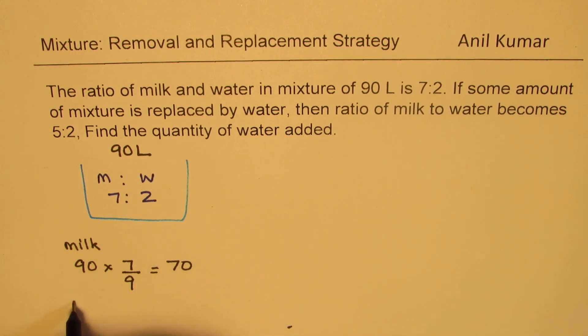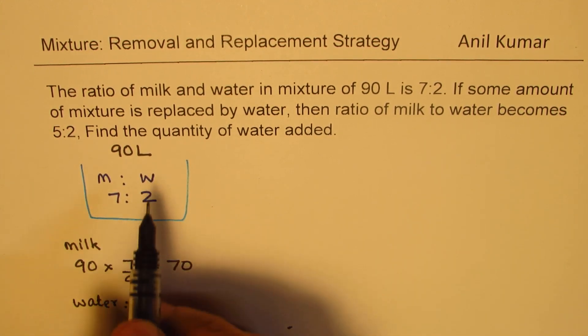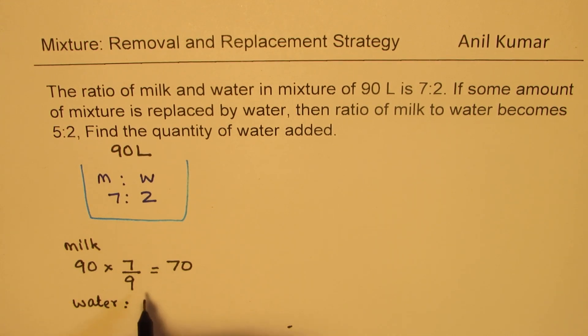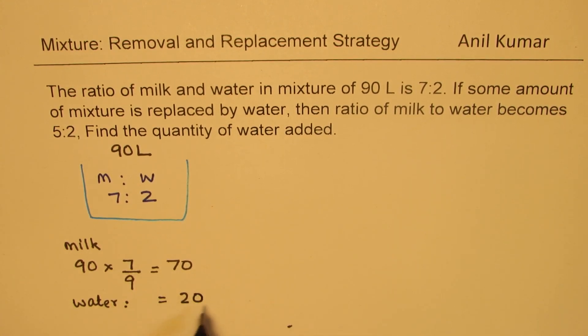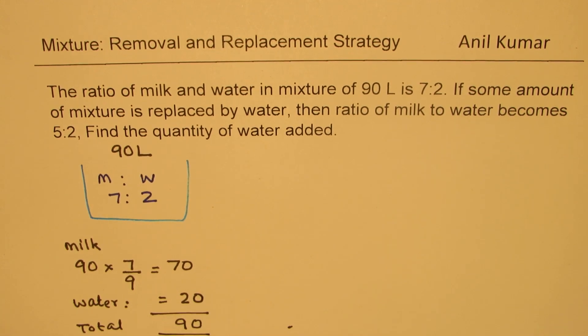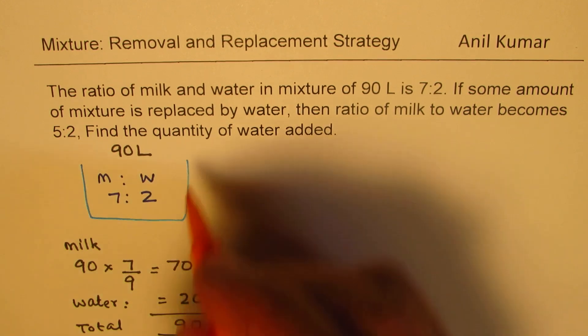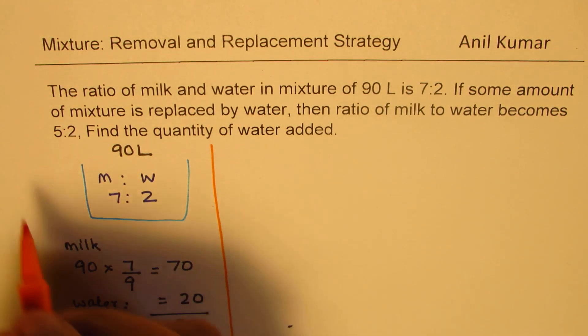Remaining of course is water. So we have water which is equal to 90 minus 70, or you could do 2 over 9 also. So water will be 20. That makes a total of 70 plus 20 as 90. So this is the initial condition given to us.